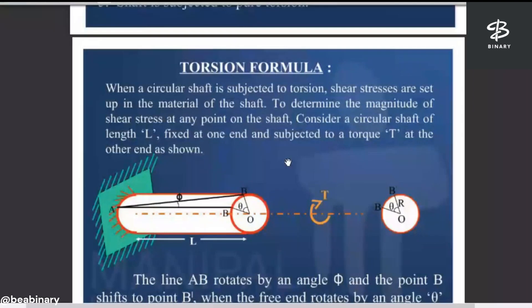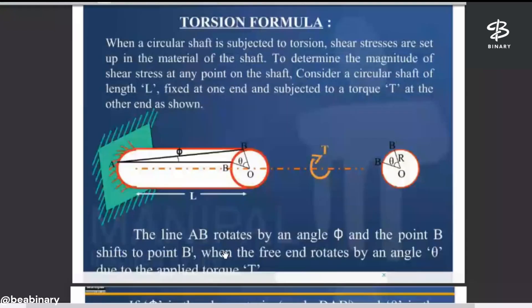This is theta, which is the angle. The line AB rotates by angle phi and the point B shifts to point B dash. Theta represents two angles: this is the longitudinal axis and this is the radial cross section.